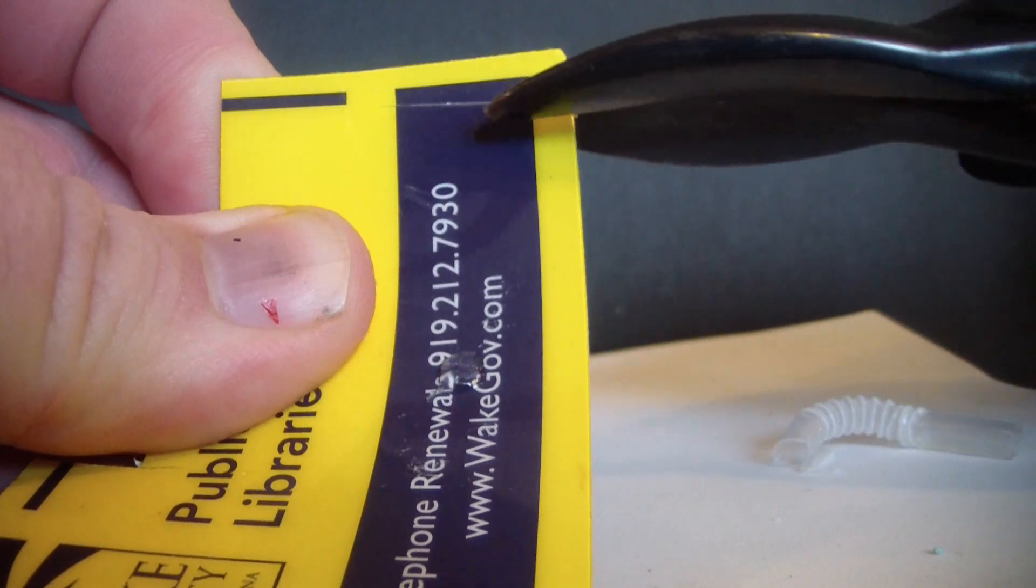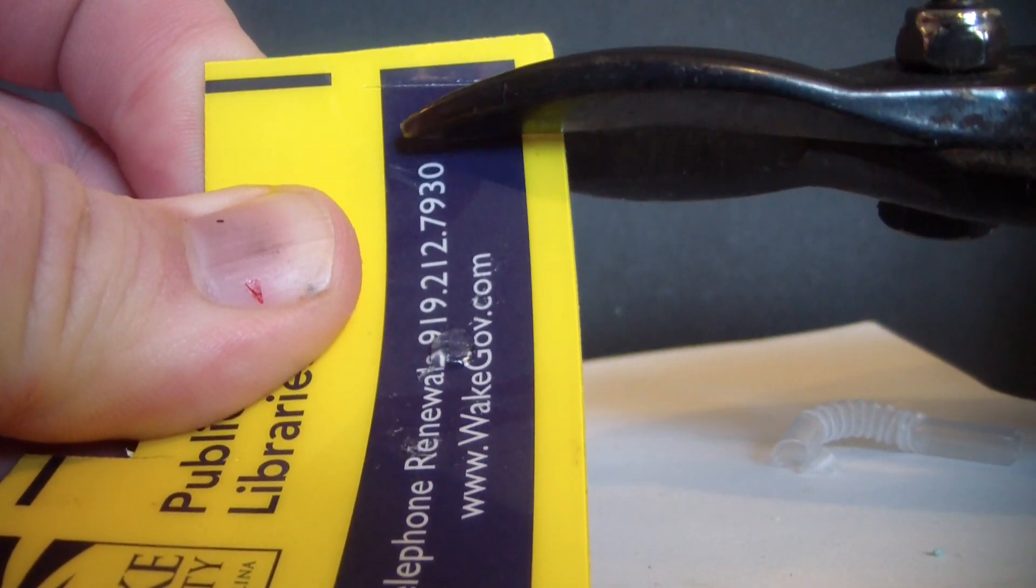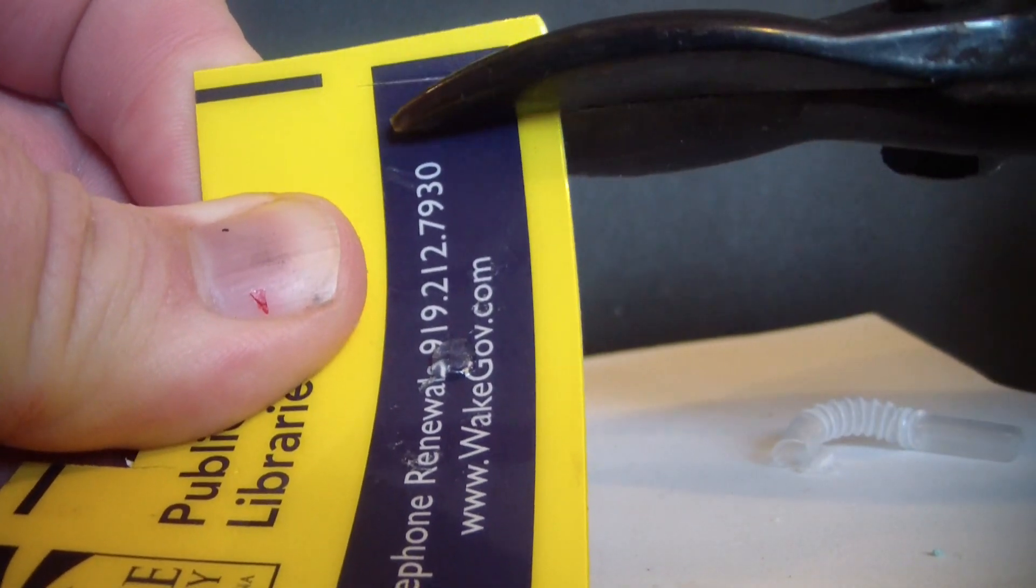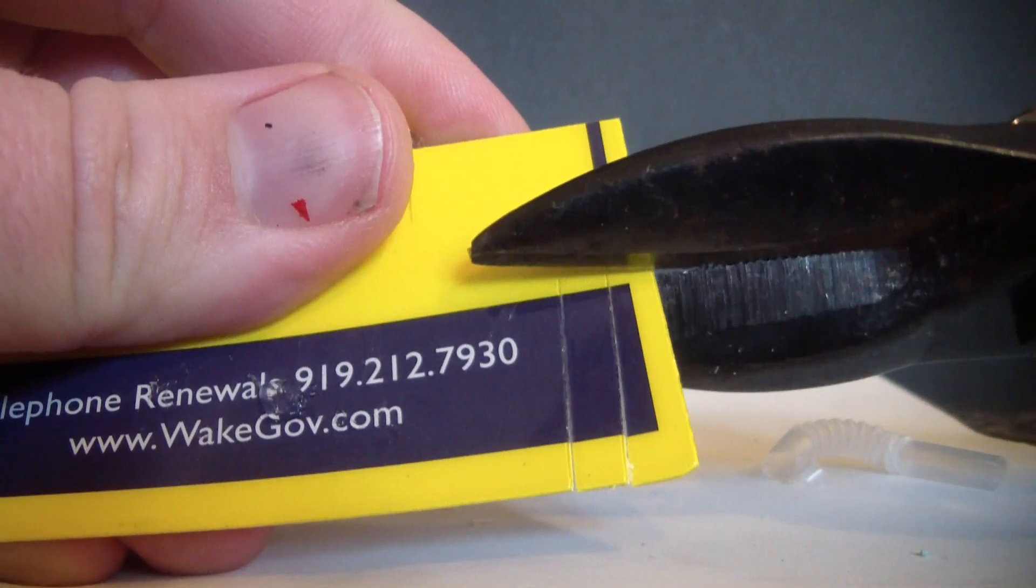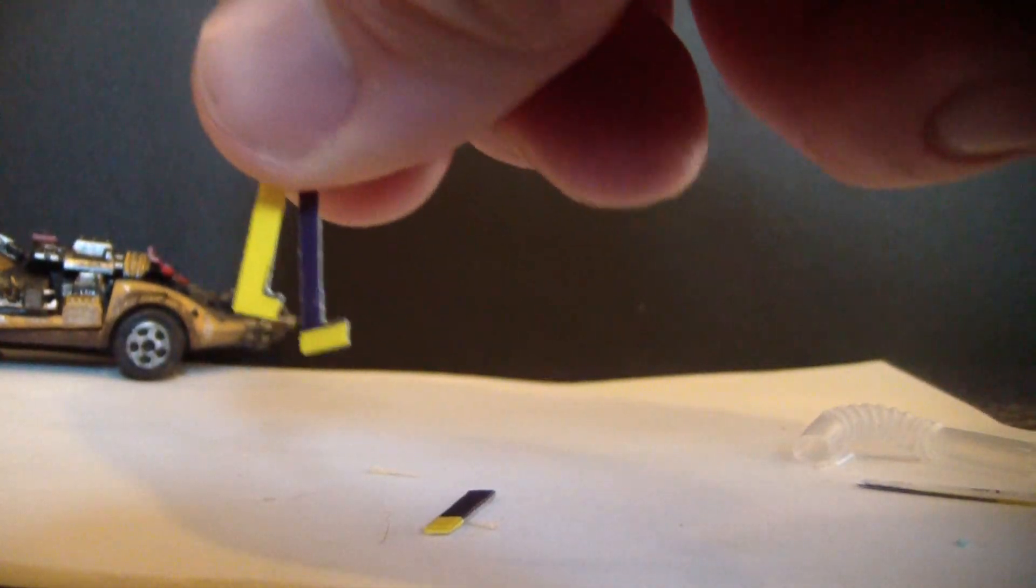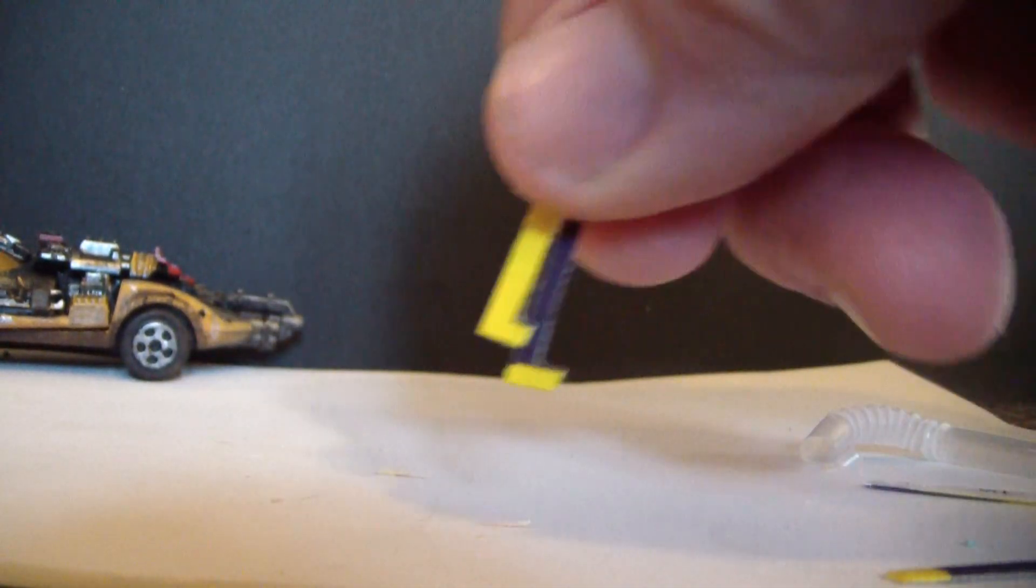Next step is we're gonna start cutting up some plastic card. I got me an old library card from Wake County. I don't live there anymore, so I ain't gonna be taking any books out from the Wake County library anytime soon. We're just gonna cut two little rectangles.